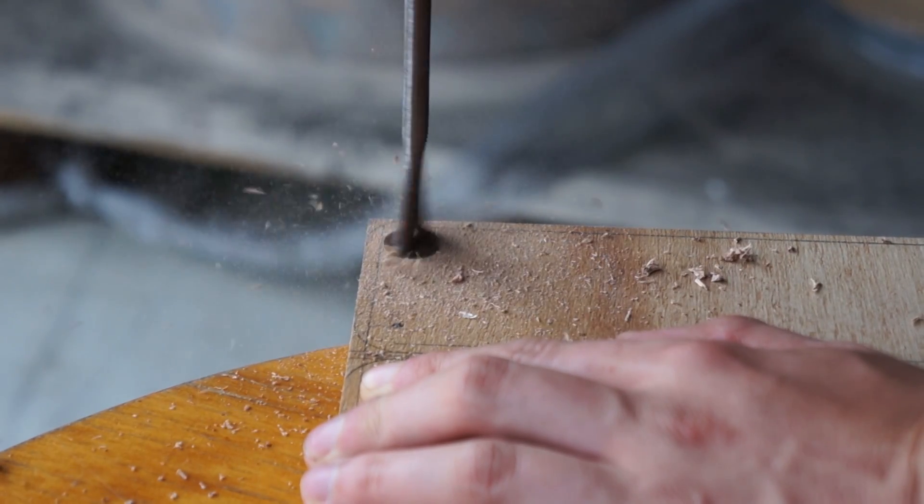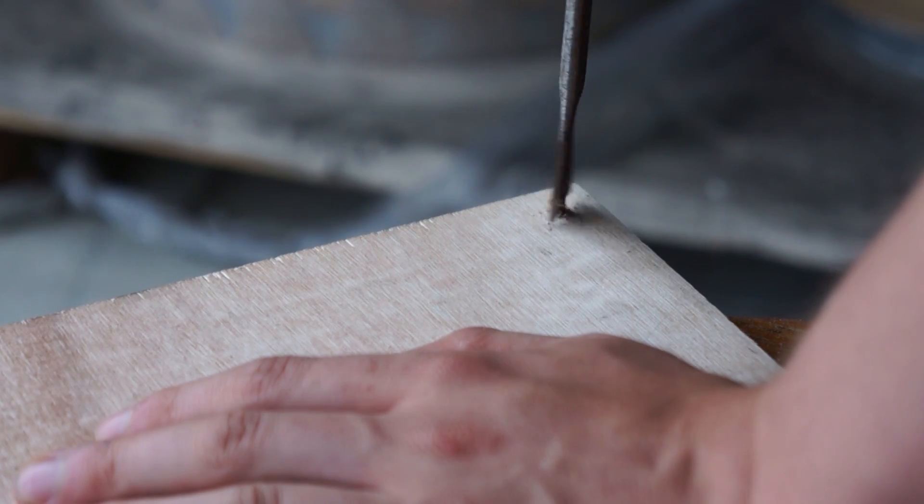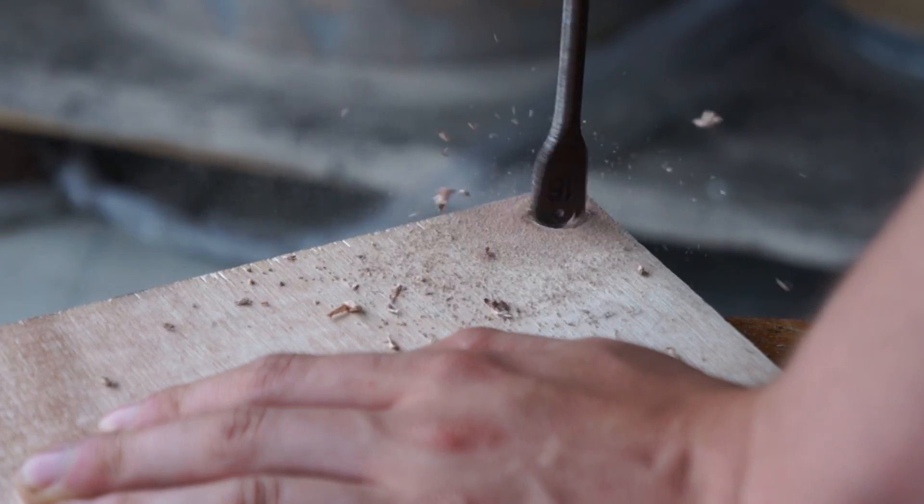And then basically we're going to cut out that area, so we'll basically be left with two rings, and the rings will stack up on top of each other and then they will make the actual enclosure.